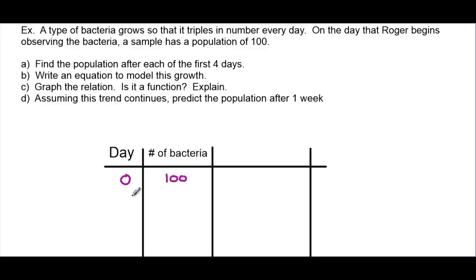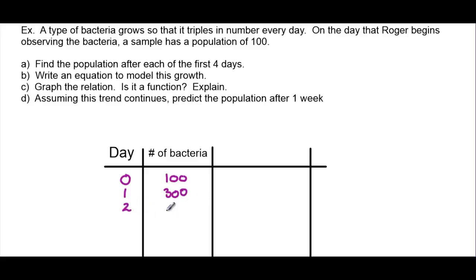After one day, the number of bacteria have tripled. Tripling 100 is equal to 300, so after one full day he should have 300 bacteria. If he waits another day, it should triple again. 300 tripled again is 900.